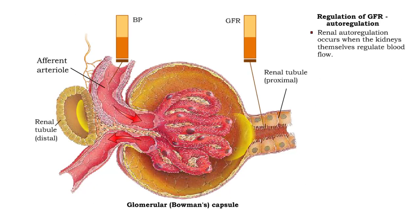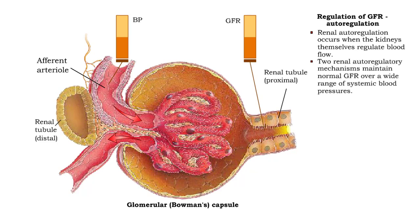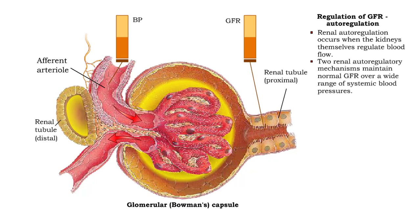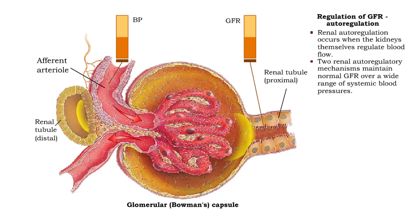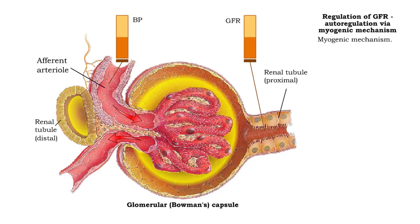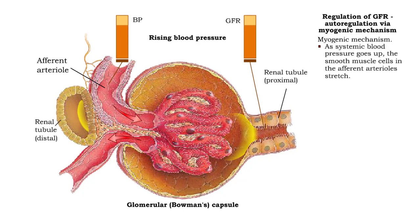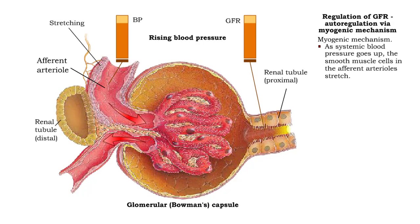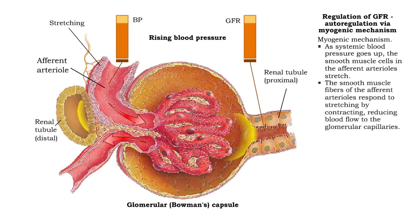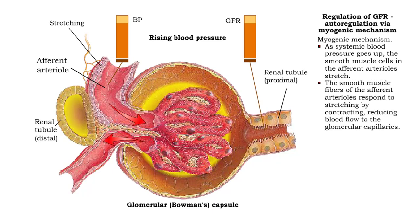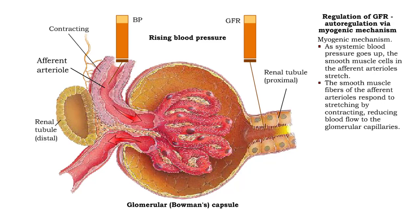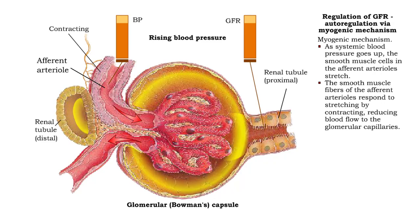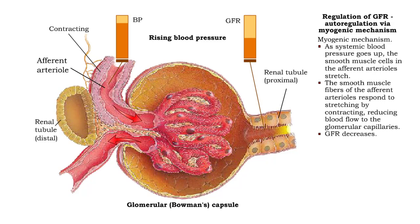Renal autoregulation occurs when the kidneys themselves regulate blood flow. There are two renal autoregulatory mechanisms that maintain a normal glomerular filtration rate over a wide range of systemic blood pressures. First, there is the myogenic mechanism. As systemic blood pressure goes up, the smooth muscle cells in the afferent arterioles stretch and respond by contracting, thereby reducing blood flow to the glomerular capillaries. Glomerular filtration rate decreases.